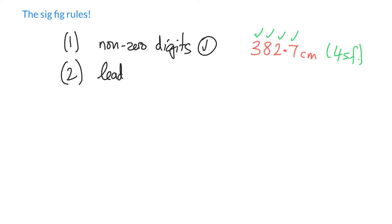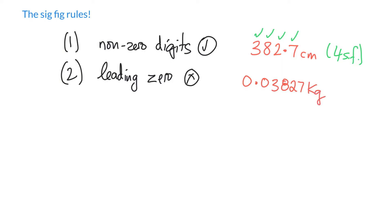The second kind of digit we have is a zero, and there are three places a zero can be. If it is a leading zero, it is never counted. For example, if you have a number like 0.03827 kilograms, those leading zeros don't count at all. Marking non-significant digits with an X and significant ones with a check mark, this measurement also has four significant figures.